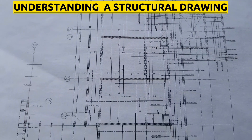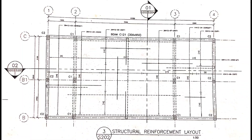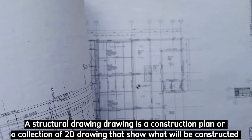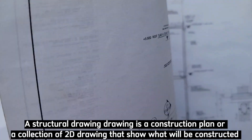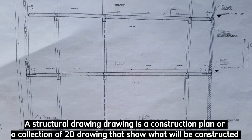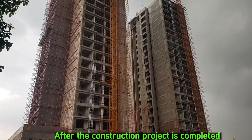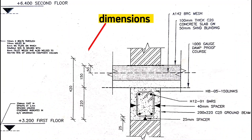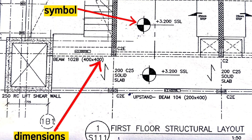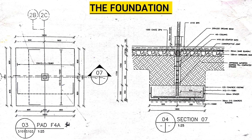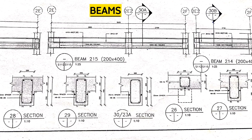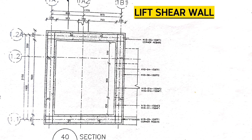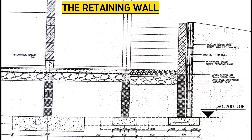Let's first clearly understand what a structural drawing means. A structural drawing is a construction plan or a collection of two-dimensional drawings or blueprints that show what will be constructed and how it will look after the construction project is completed. It contains information in the form of dimensions, symbols, abbreviations, line types, the foundation, beams, slabs, columns, the lift shear wall, the retaining wall, among others.